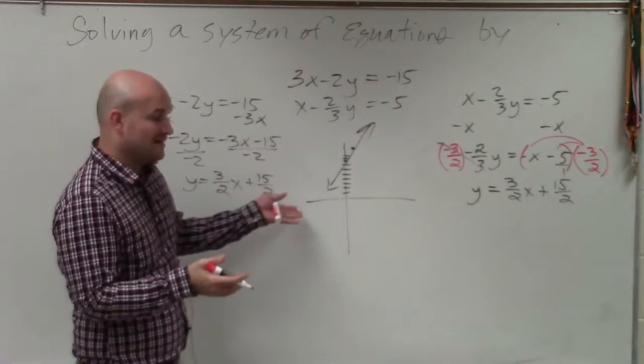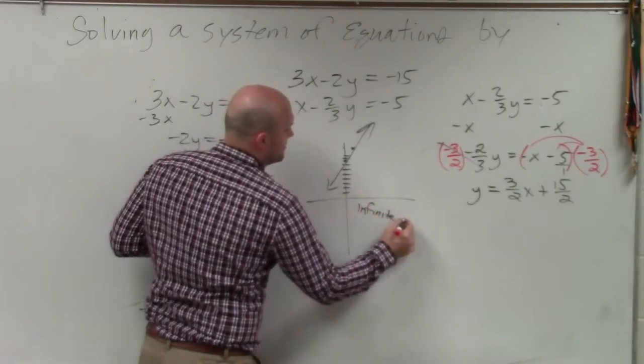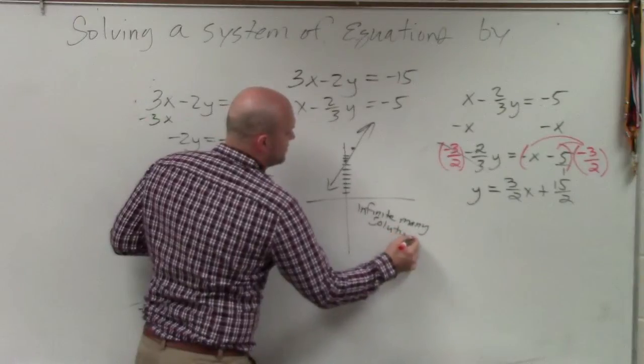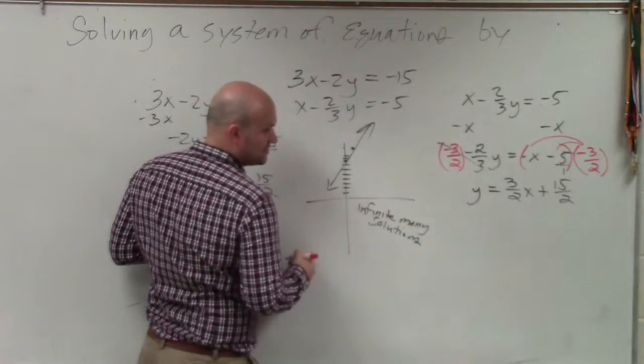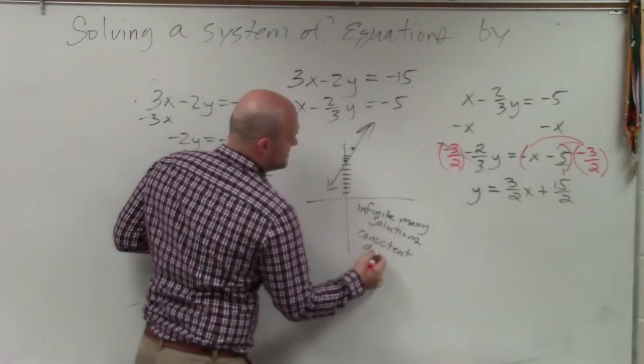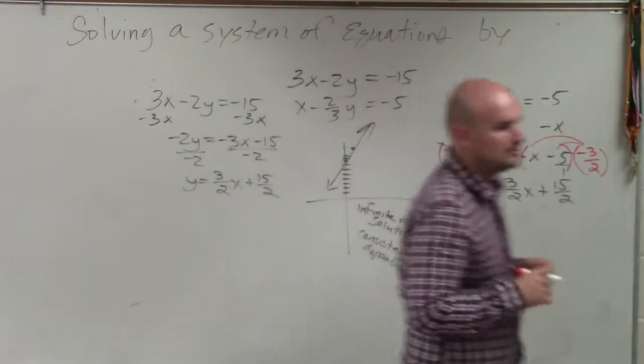But it's the same graph twice. So therefore, the solution is infinite many solutions. Because they don't just intersect at one point. They intersect at every point, because they're the same line. It's consistent and it's dependent. OK? And that's it.